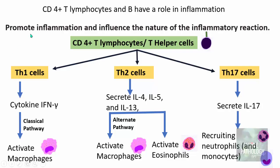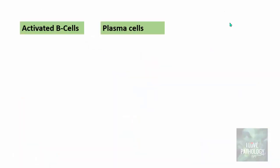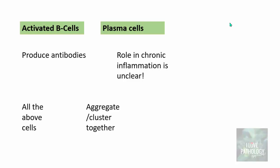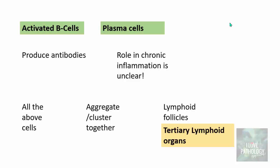Basically, these CD4 positive T cells promote inflammation and influence the nature of the inflammatory reaction. As for B cells, once activated they progress to form plasma cells, which produce antibodies. In chronic inflammatory conditions, you find lots of antibodies, though the exact role of these antibodies is not well established. In chronic inflammation, all these cells — T cells, B cells, plasma cells — cluster together to form lymphoid follicles at the sites of chronic inflammation, called tertiary lymphoid organs. Examples include Hashimoto's thyroiditis, where you find lymphoid follicles in the thyroid stroma, and chronic pyelonephritis, where you find lymphoid follicles in the kidney. The significance of these tertiary lymphoid organs is not fully established.